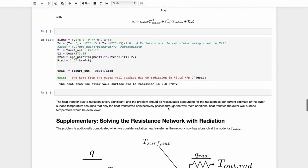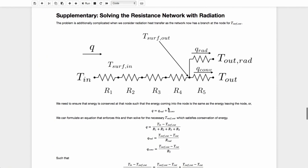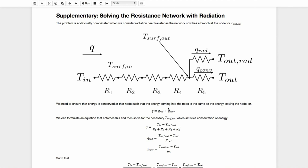So now I'm going to look at the supplementary question, solving the resistance network with radiation. Instead of just saying, yes, we're very confident that radiation was significant, let's actually calculate it correctly, not just assuming that outer surface temperature that we calculated when we had no radiation and using it to estimate this, but let's do this properly.